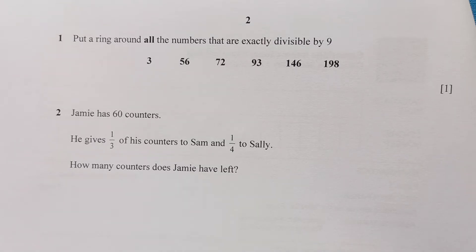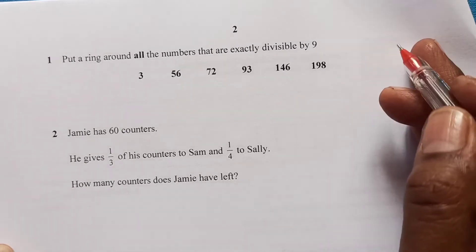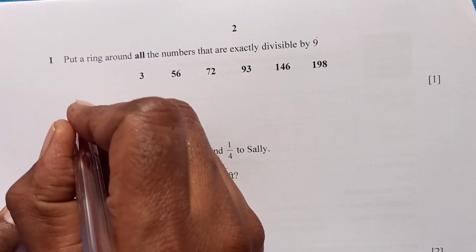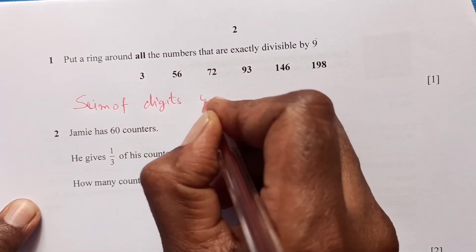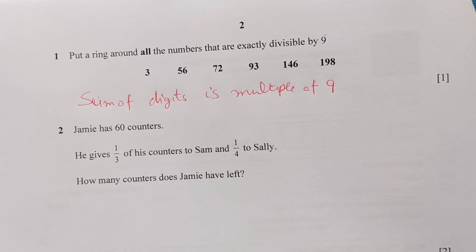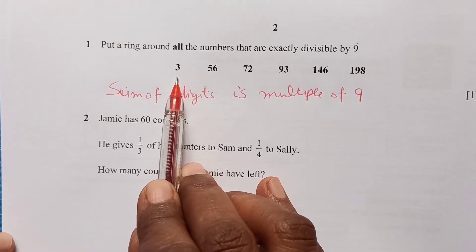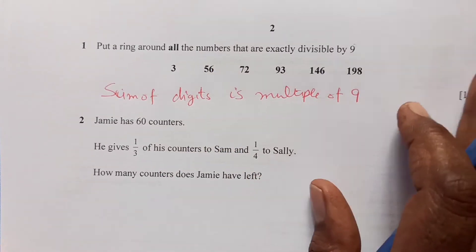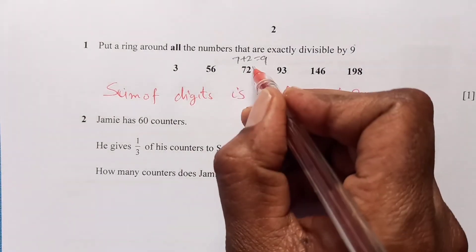Question one: put a ring around all the numbers that are exactly divisible by nine. First of all, you need to know what numbers are divisible by nine. The rule is the same as for three — if the sum of the digits is a multiple of nine, then that number is divisible by nine. The first number: three is smaller, so it cannot. Five plus six is eleven, so it is not divisible. Seven plus two is nine, so nine is divisible by nine — so we put a ring around that one.